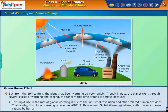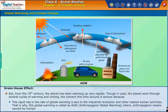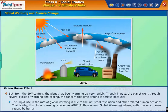This rapid rise in the rate of global warming is due to the industrial revolution and other related human activities. That is why this global warming is called AGW — Anthropogenic Global Warming — where anthropogenic means caused by humans.